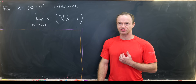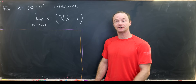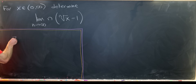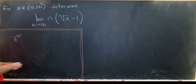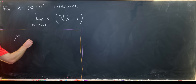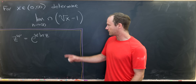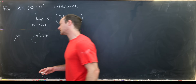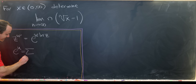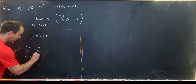Our first strategy will be to expand the nth root of x using a power series, but I need to recall a couple of things first. If I have two numbers z and w — these can be complex numbers — then z to the w power is the same as e to the w times the natural log of z. The series expansion for the exponential function is e to the u equals the sum as k goes from zero to infinity of u to the k over k factorial.